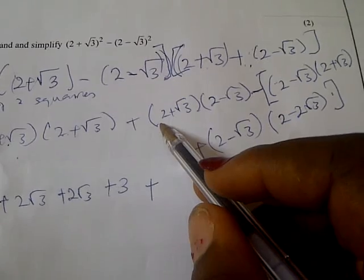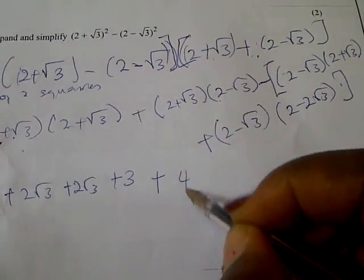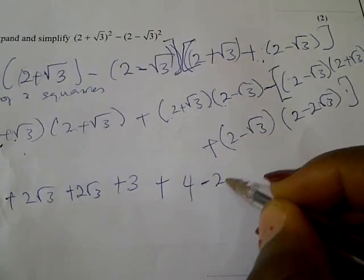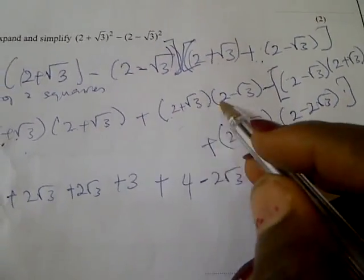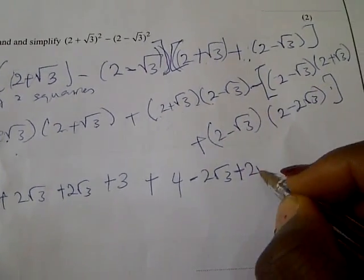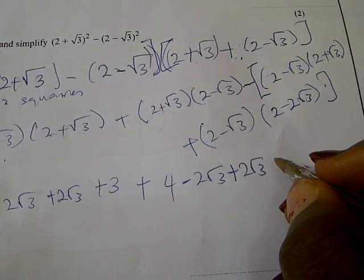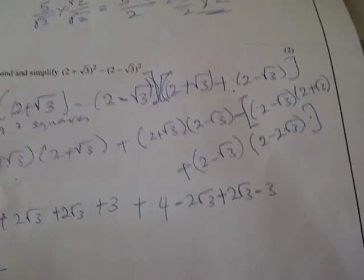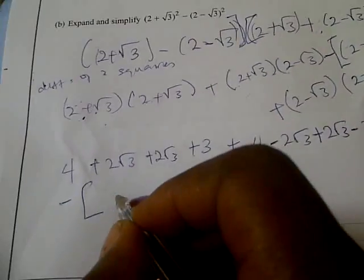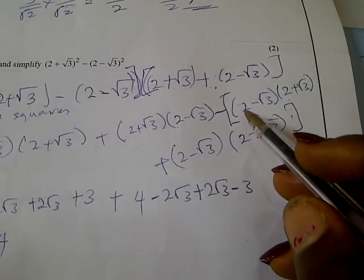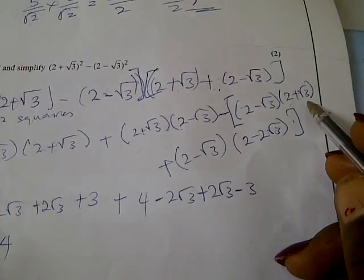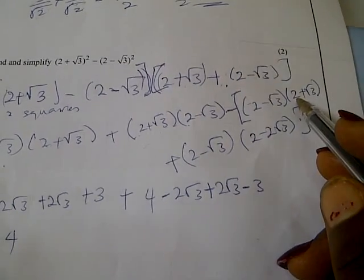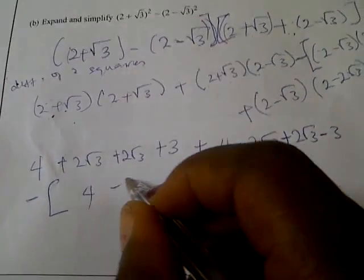Plus 2 times this is plus 2√3. This times this is minus 3. Now let's go to the next one — bring out the negative in the bracket. This times this is 4. This times this is plus 2√3. This times this is minus 2√3 — that's 0. This times this is minus 3.